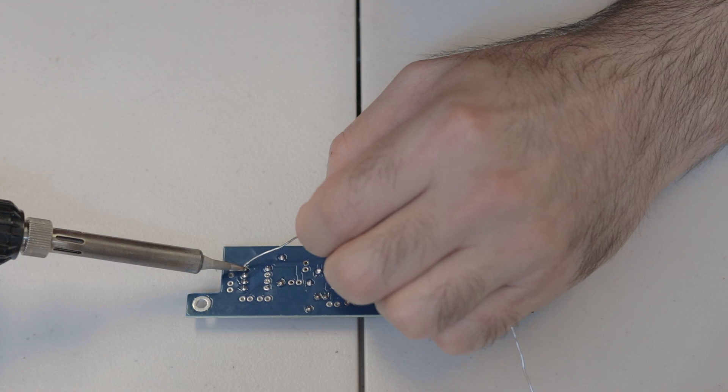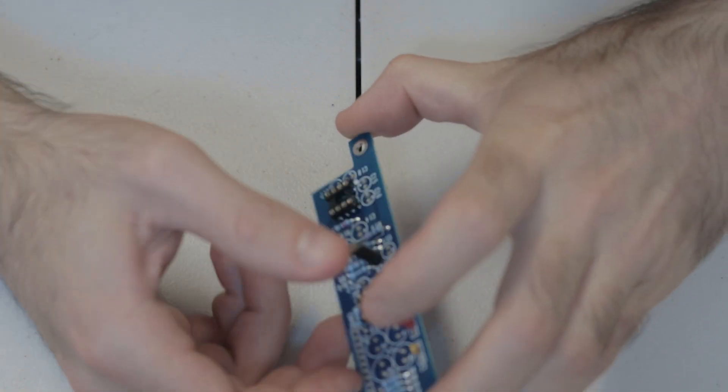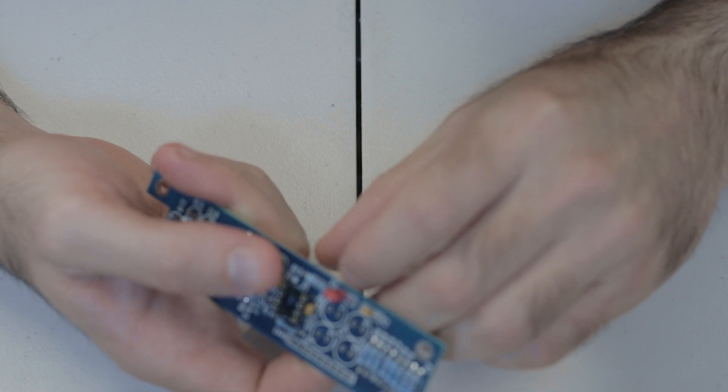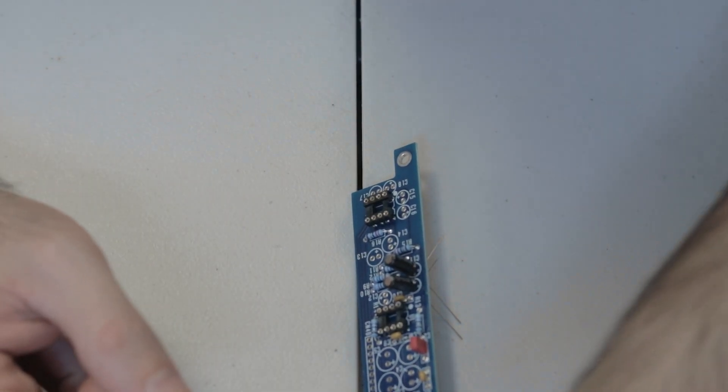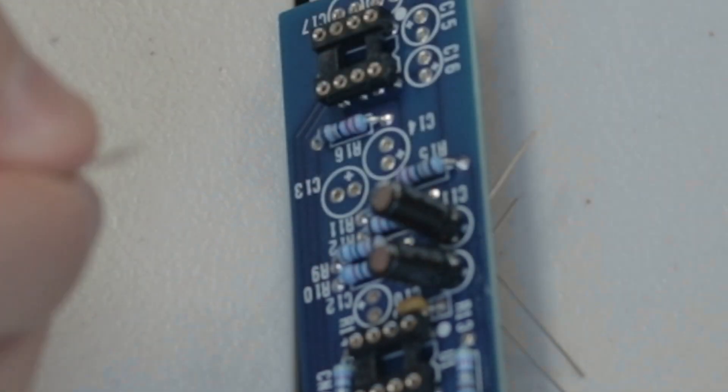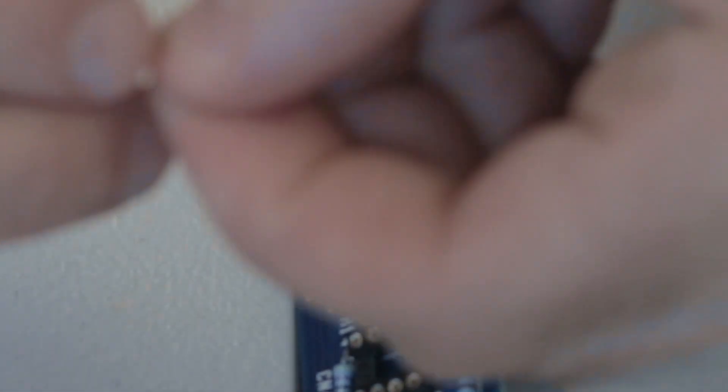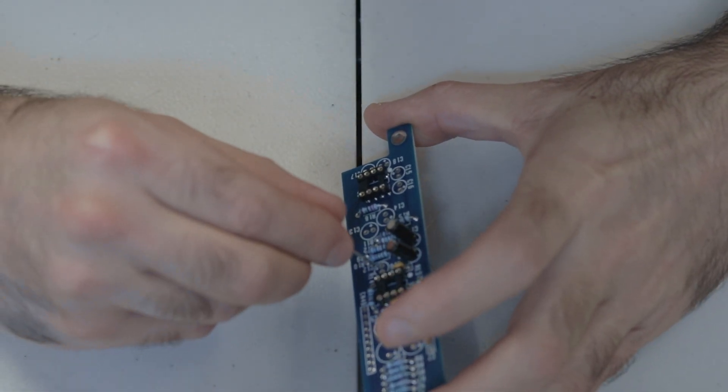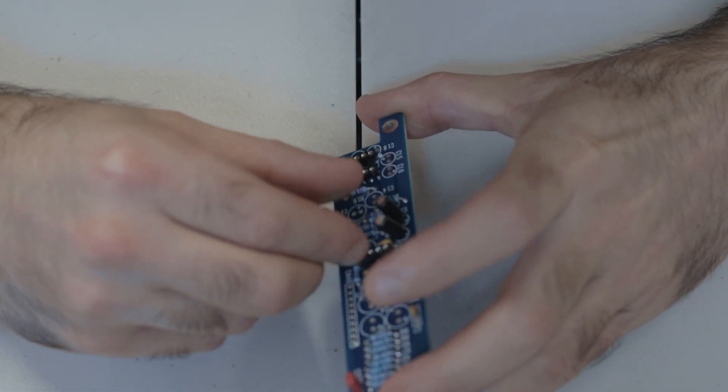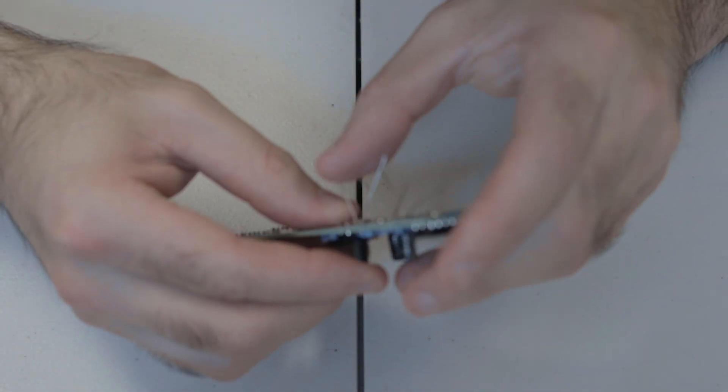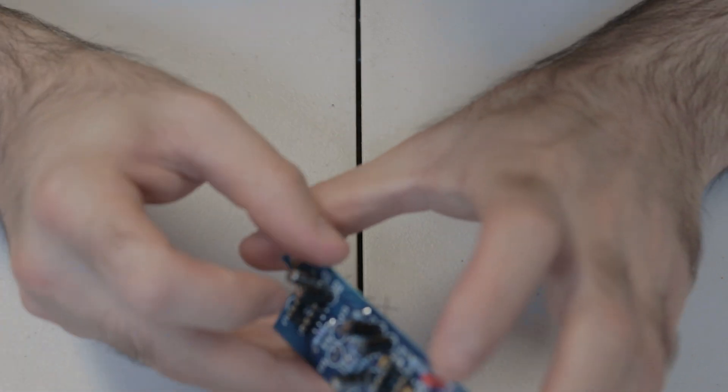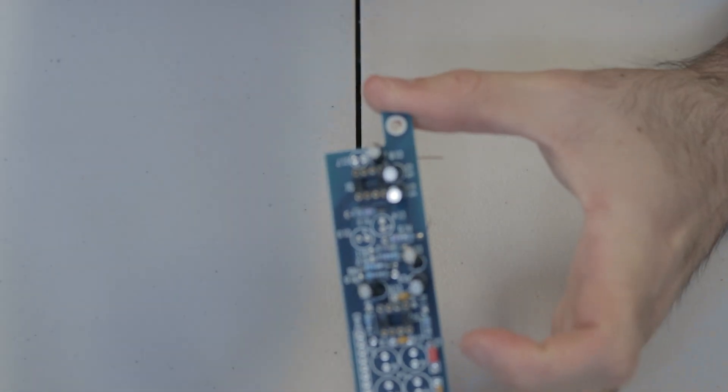And then there's some electrolytic capacitors to solder in. Remember with electrolytic capacitors that it's very important to orient these properly. So make sure that the plus lead goes into the plus hole, which means the silver little line down the electrolytic capacitor is the negative lead. So that goes on the opposite side. So just make sure you get those right, put them in the board and then bend the legs.